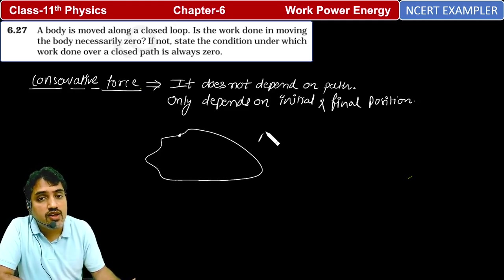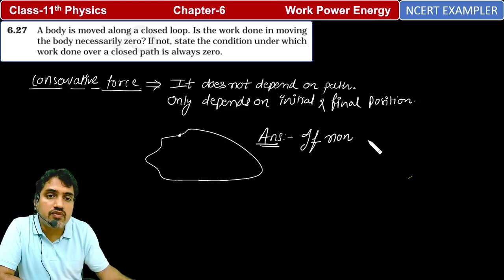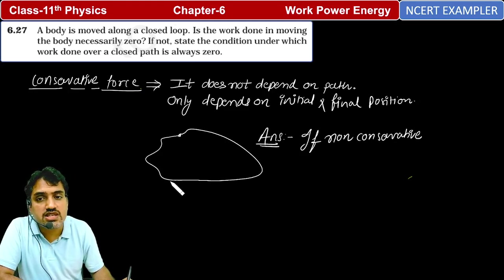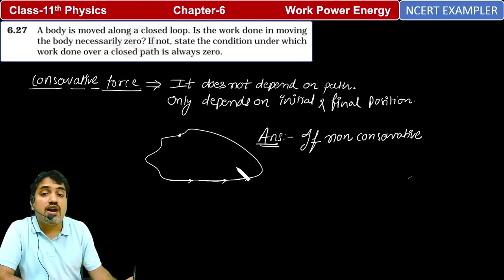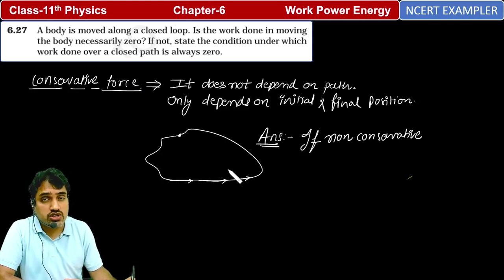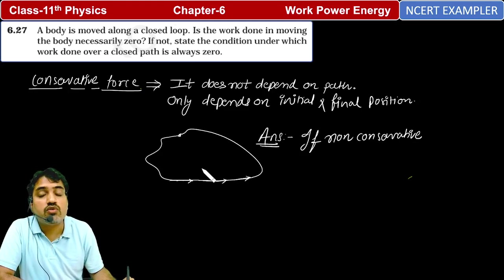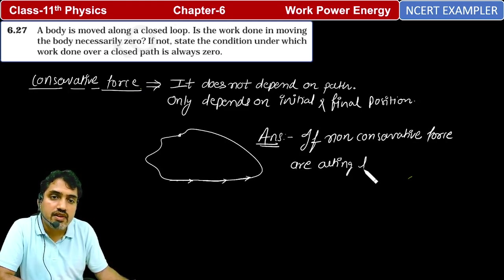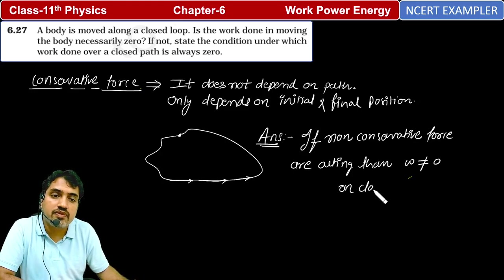अगर non-conservative force काम कर रहे हैं — हम gravitational force की बात करें, हम electrostatic force की बात करें — तो work done zero होगा close path पर, क्योंकि वो conservative है। So if non-conservative forces are acting, then work done is not equal to zero on a closed path. Close path पर work done zero नहीं होगा।